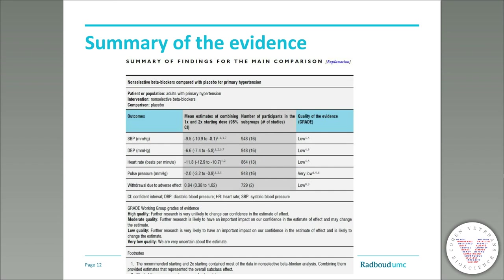The results of GRADE can be integrated in a summary of findings table. Such a table contains a list of all important outcomes — blood pressure, heart rate, pulse pressure, etc. — and considers both desirable and undesirable outcomes, so efficacy and harms. It also shows a typical burden of these outcomes, effect sizes, the number of participants and studies, and the score of the overall certainty in the body of evidence. Importantly, everything is transparent, so there is space for comments and footnotes.